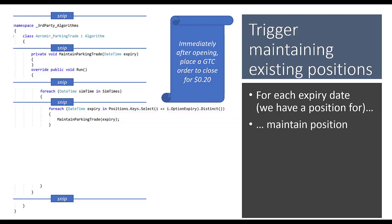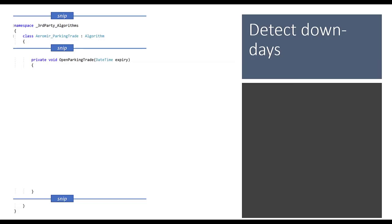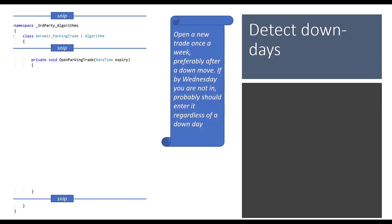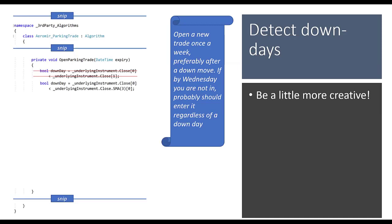Inside OpenParkingTrade: the rules say to open preferably after a down move or no later than Wednesday. One approach is checking if today's closing price is lower than yesterday's. A better approach I prefer is checking if today's close is lower than the three-day moving average of close prices. The point is that when coding rules, you need to interpret them — don't take them verbatim. Think about how a human would actually execute this.